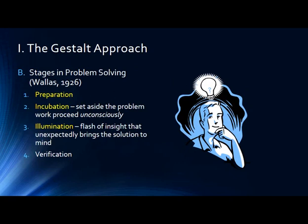Illumination is the flash of insight that suddenly brings the solution to mind. For example, 'To pay the rent, I'll sell my roommate's stuff' — I don't recommend that, by the way. You come up with some sort of illumination that provides the ability to pay the rent or fix the tire. It's a sudden flash of insight that unexpectedly brings the solution to mind.